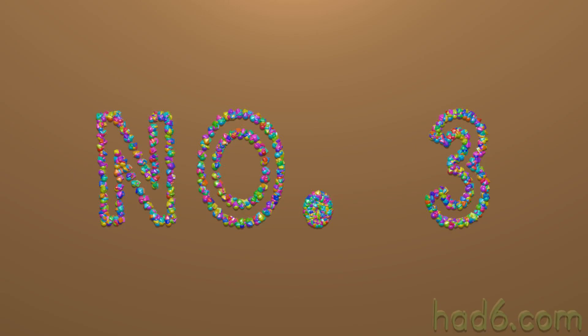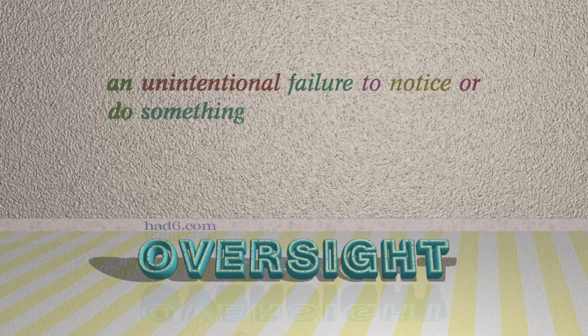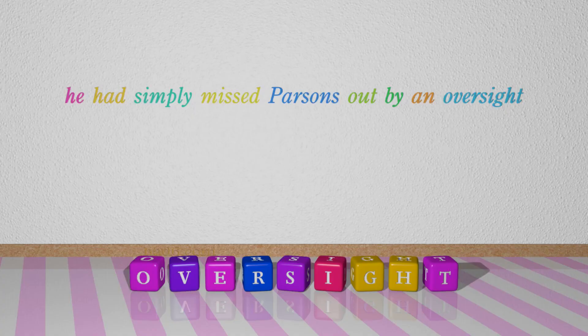Number 3: Oversight, which means an unintentional failure to notice or do something. For example: He had simply missed persons out by an oversight.